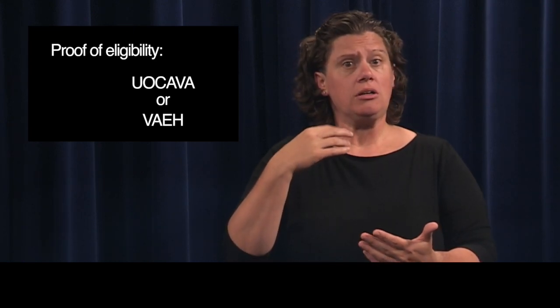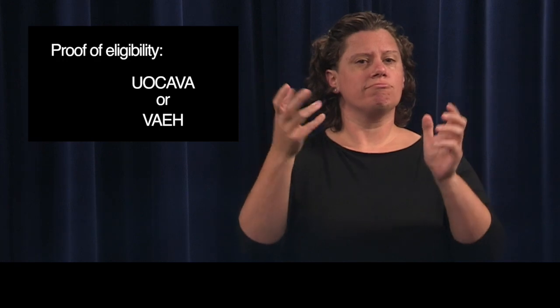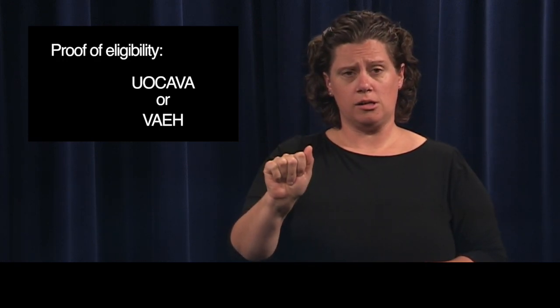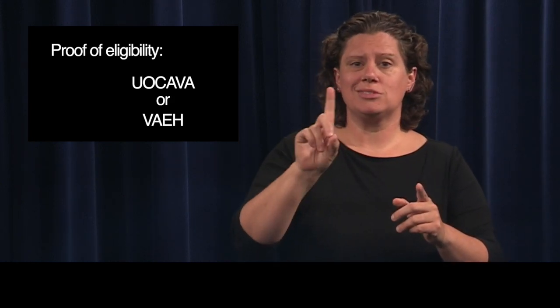Also, include one of the following that shows your name and your current address: photo identification, paycheck stub, a utility bill such as gas, water, cable, or telephone, a bank statement, a government document, or proof of eligibility under the Uniformed and Overseas Citizen Absentee Voting Act (UOCAVA), or your eligibility under the Voting Accessibility for the Elderly and Handicapped Act (VAEH).